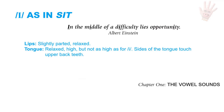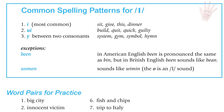I as in sit. The lips are slightly parted and relaxed. The tongue is also relaxed and high, but not as high as for the E sound. The sides of the tongue touch the upper back teeth. Common spelling patterns: the letter I as in sit, give, this, dinner; UI as in build, quit, quick, guilty; and Y between two consonants as in system, gym, symbol, and hymn.